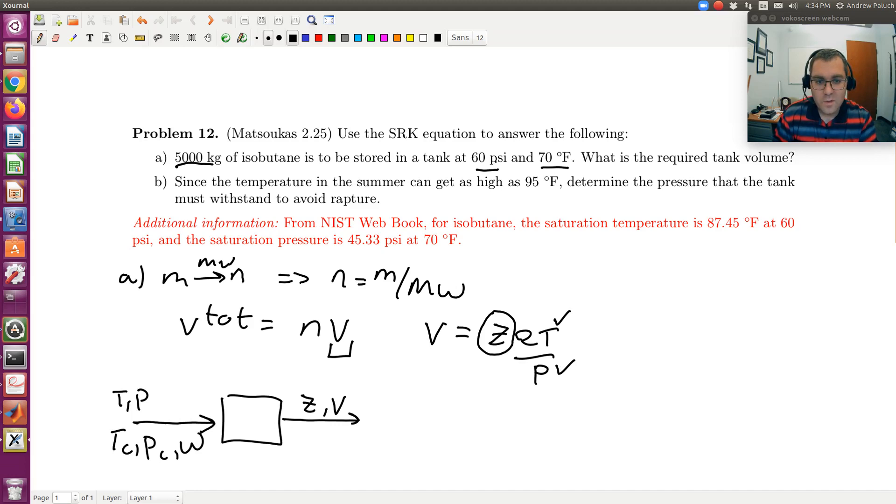our temperature is less than saturation temperature. So since T is less than T sat, it must mean that we have a liquid. Just as, at the same temperature, at that temperature, P sat is 45.33 psi. Our pressure is greater than saturation pressure. So in this case, we must have a liquid. So we have a liquid. So that just tells us what root to choose.